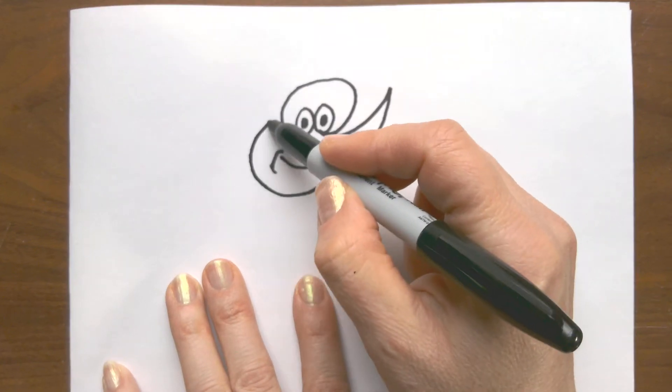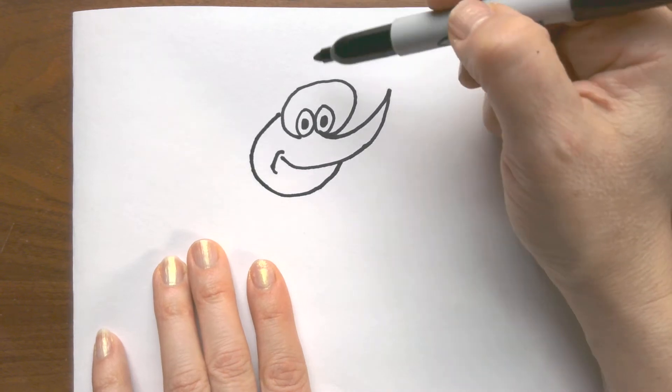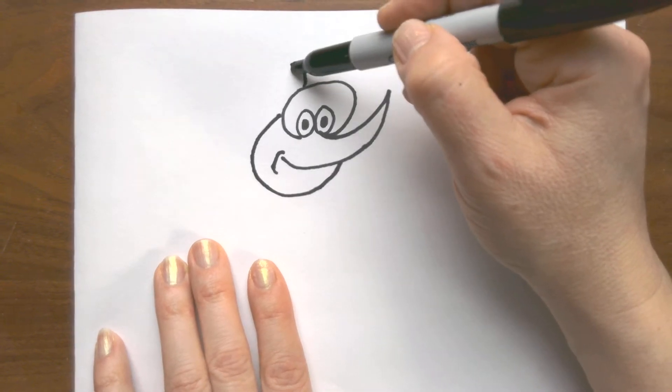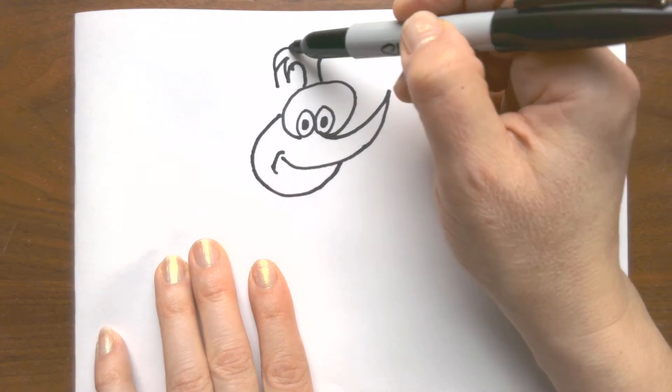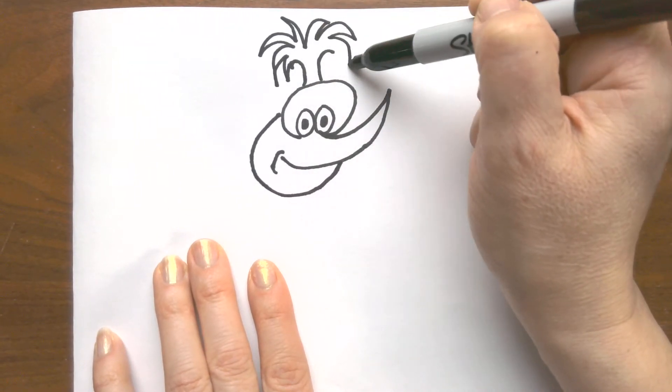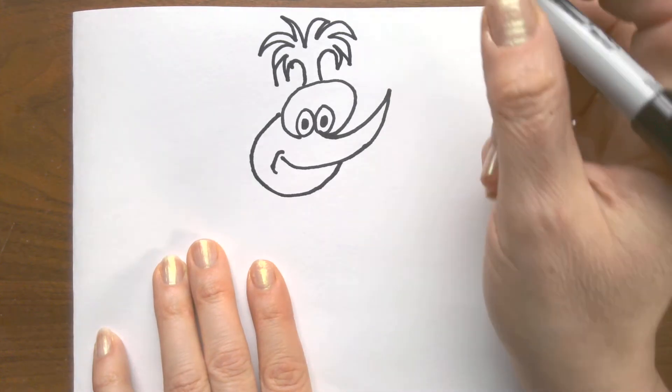So there's our head. Now I'm going to draw a curved line this way and a curved line this way for some feathers. I'm just going back and forth - these are going to be some feathers sticking up at the top.